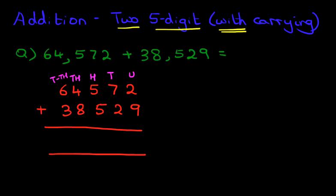We are now ready to go ahead and do the addition. So let's start on the right hand side. Two plus nine. Let's do some workings as well. Two plus nine is 11. So let's write this down. One here and one here.